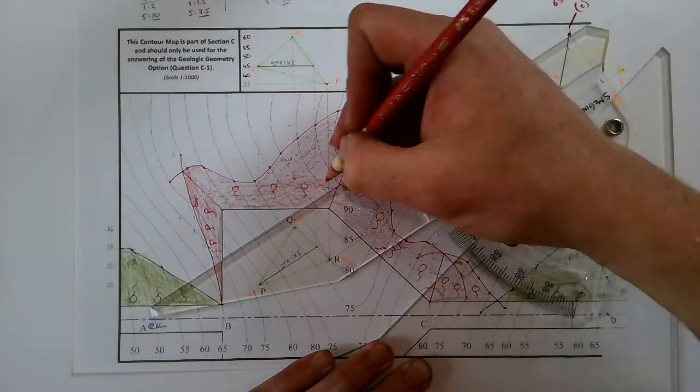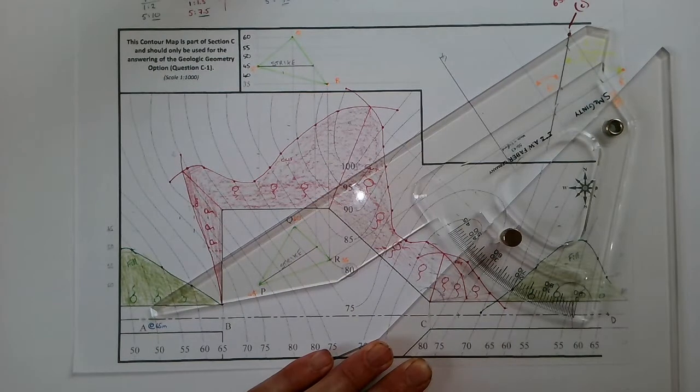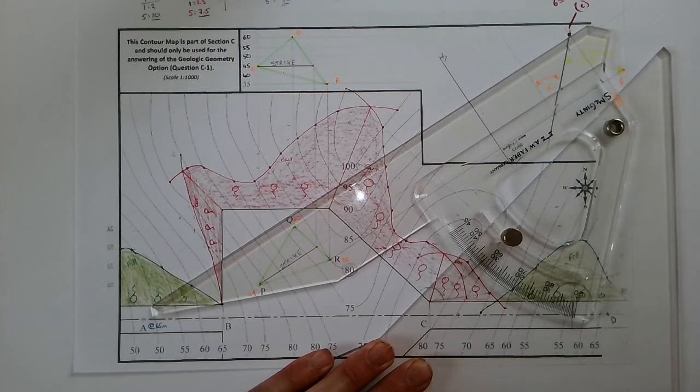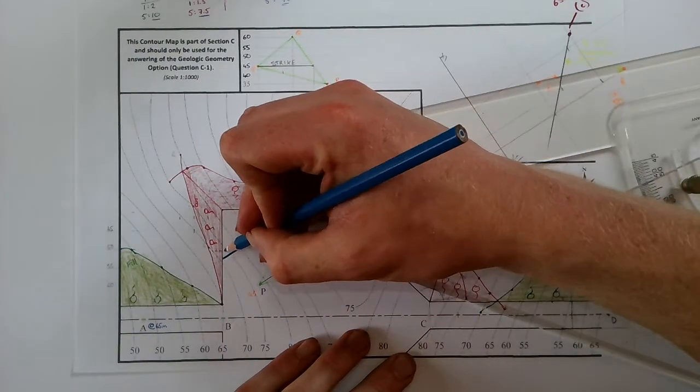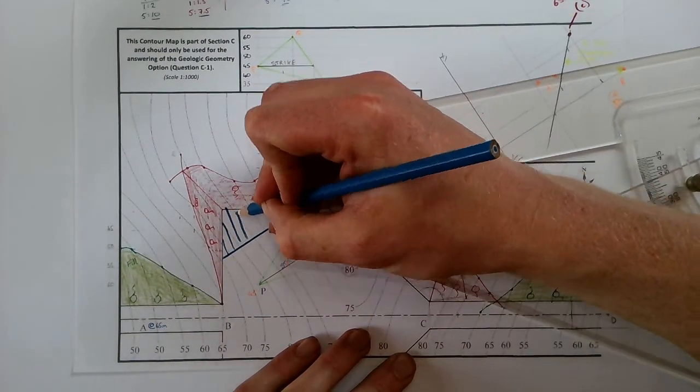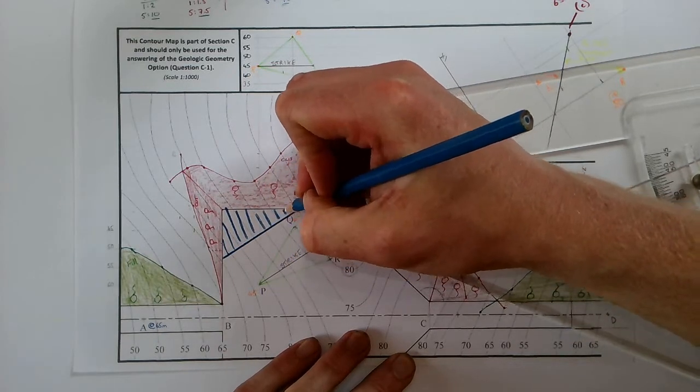I'll just mark that off in a different colour, and there's a blue colour here. So that is a section that it cuts. And that is part C.